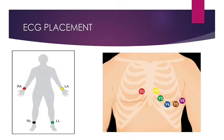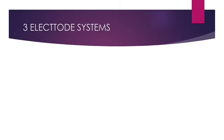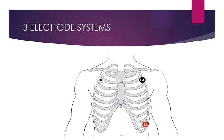There are other electrode systems like the 3-electrode system. You see in this image, it uses 3 electrodes: right arm, left arm, and left leg. The right leg electrode is not used. The monitor displays bipolar leads 1, 2, and 3.